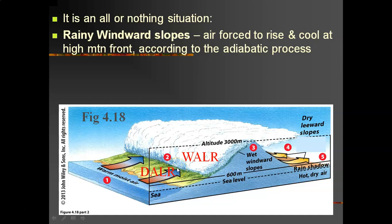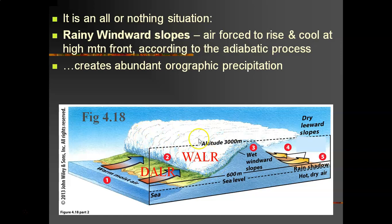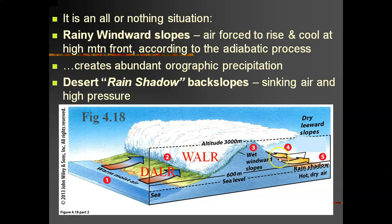Eventually we hit 100% relative humidity, and the air continues to be forced to rise by the westerly winds up the mountains. The air is now creating the orographic cloud, rising and cooling at the wet adiabatic lapse rate. We wind up with abundant rainfall only on the windward slopes.